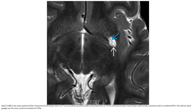This is the T2 image in the same patient. The lesion seen on CT appears as an oval focus of CSF-isointense T2 signal in the central basal ganglia, consistent with an incidental perivascular space. The inferior basal ganglia are the most common location of PVS.